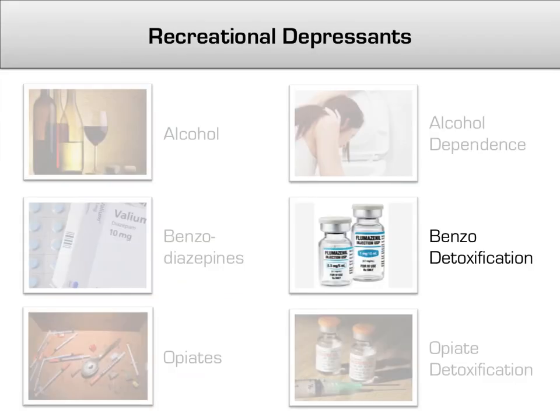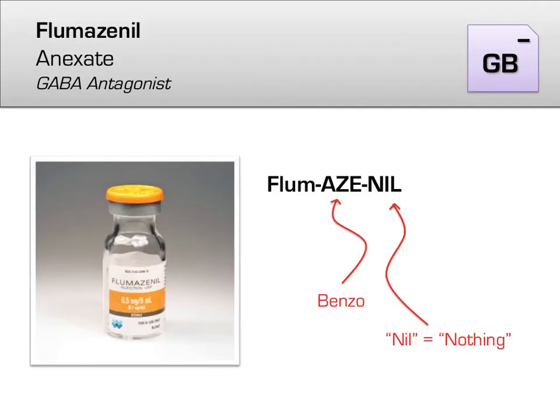Benzodiazepine overdose, while not as uniformly fatal as barbiturate overdose, is still a dangerous situation, so knowing how to handle it in an emergency setting is important. For patients who have overdosed on benzodiazepines, there is a treatment available which antagonizes GABA, known as flumazenil, brand name Anexate, indicated for acute benzodiazepine toxicity. You can remember that flumazenil is related to benzos by the 'aza' in its name, and that it is an antagonist by thinking of the 'nil' at the end — nil means nothing, so flumazenil turns benzos into nothing.